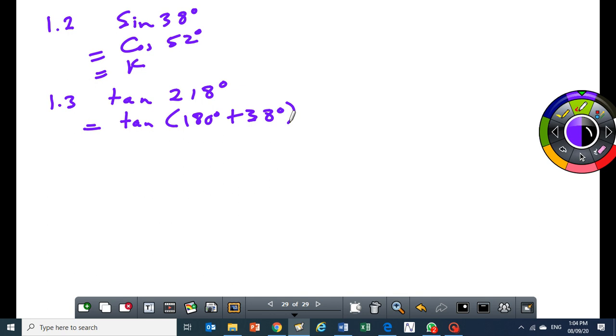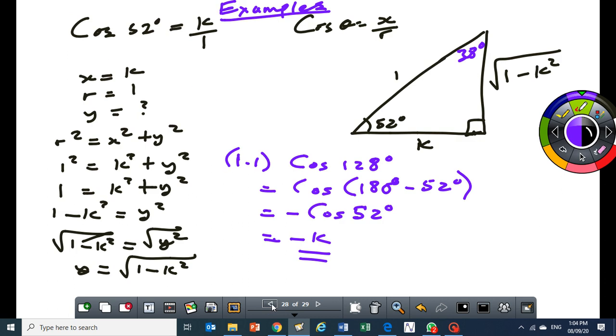And then this becomes tan 38 degrees. Now check this out. If you go to the diagram, do you see the 38 on the diagram? It becomes a grade 10 question. Opposite side, adjacent side. The opposite side is K. The adjacent side will be square root of 1 minus K squared.